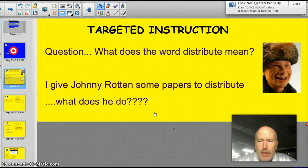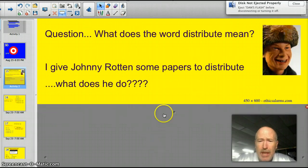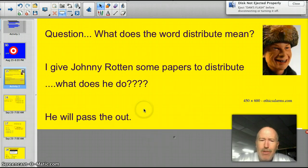Here's the question. What is the word distribute? I mean, there's a great picture of Johnny Rotten over there. It's actually Clive Fargus, I think, from the Christmas story. I give Johnny Rotten some apples, some papers to distribute. What does he do? He distributes the papers. You've heard the teachers say that before. He passes them out. That's what the word distribute means, to pass out.